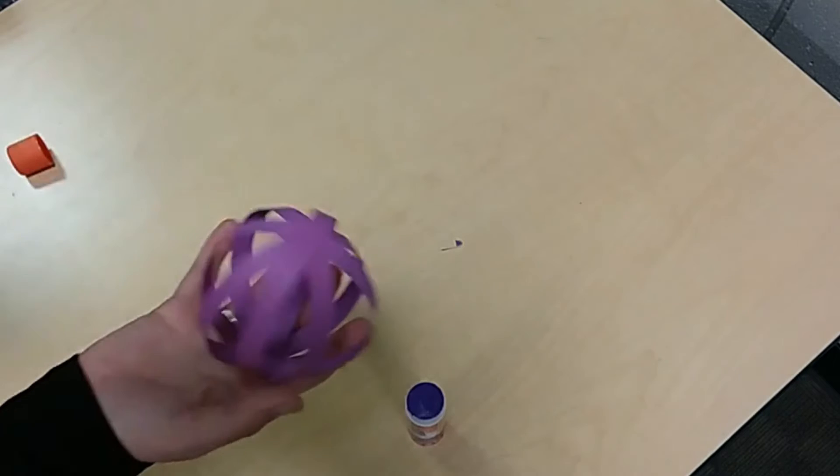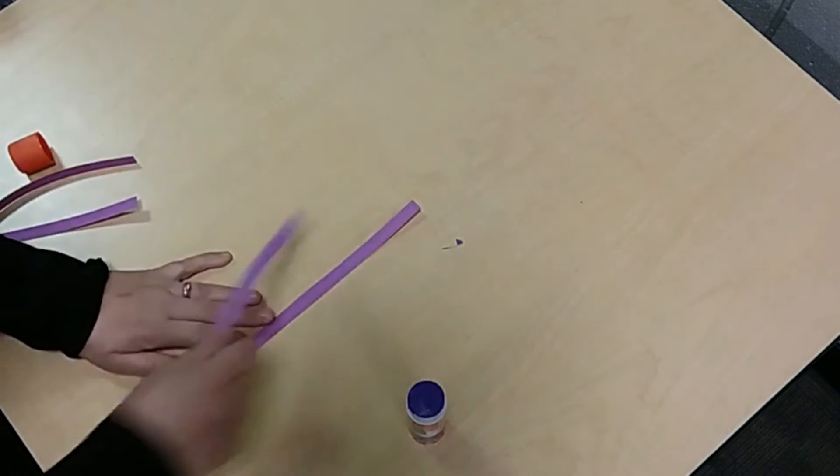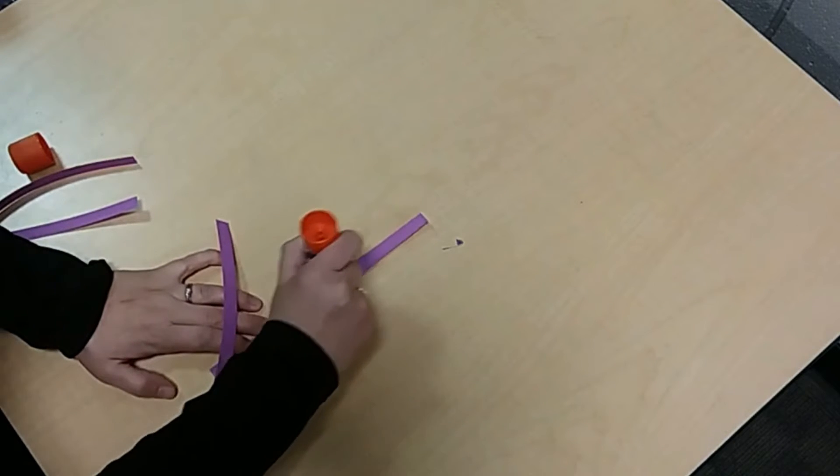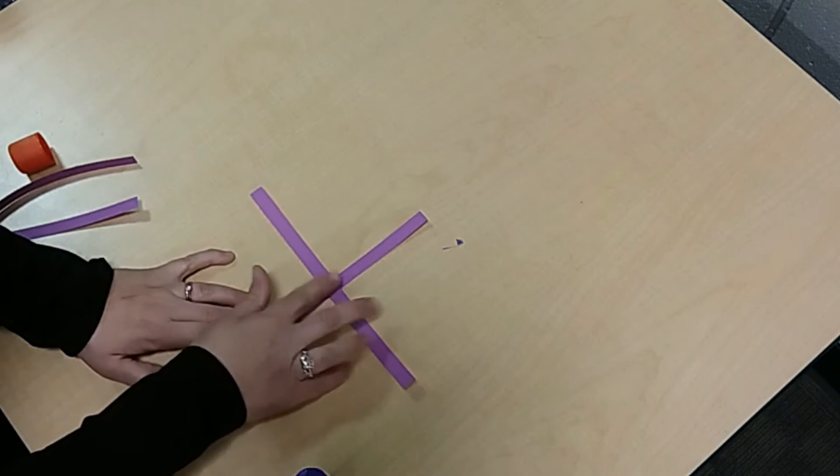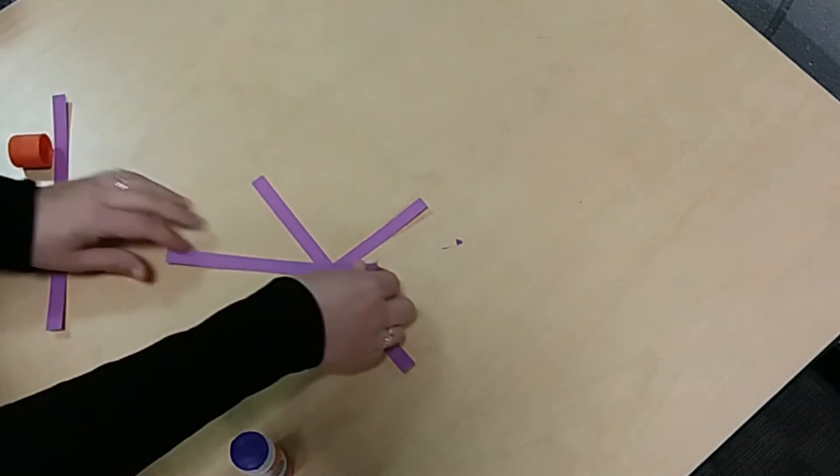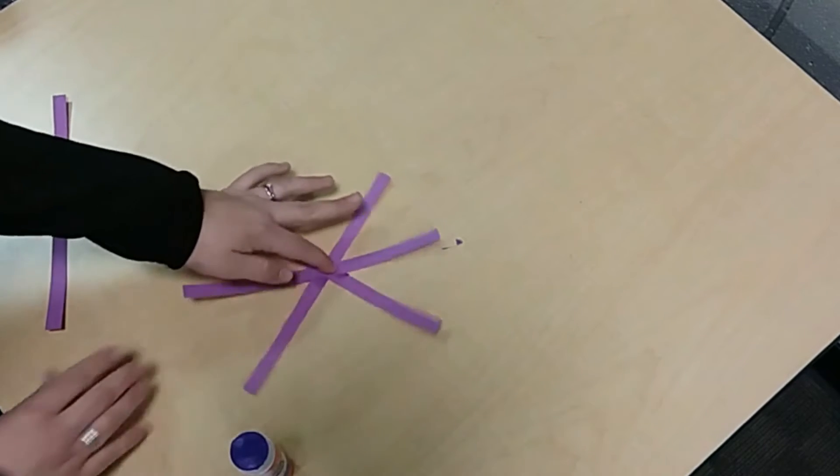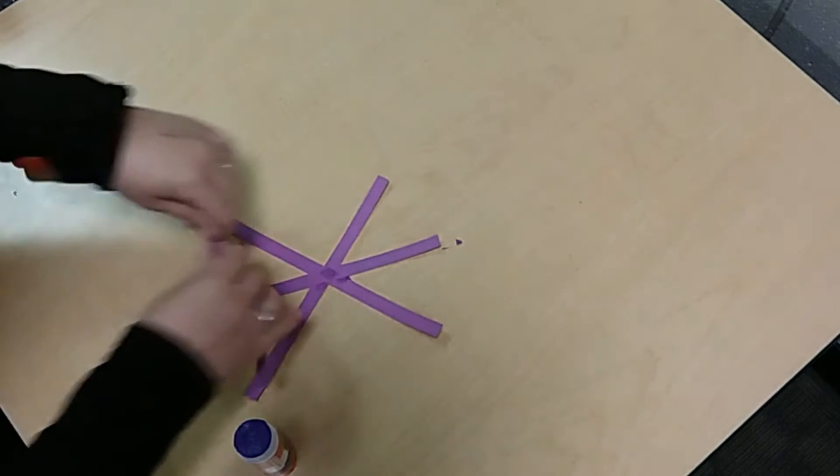I'm going to put this to the side and grab my shorter pieces of construction paper. We're going to do the same thing over again. Put glue in the middle here, and then I'll start by making a cross. Try my best to put it in the middle of both pieces. Then I'll put glue in the middle again and push this one down.